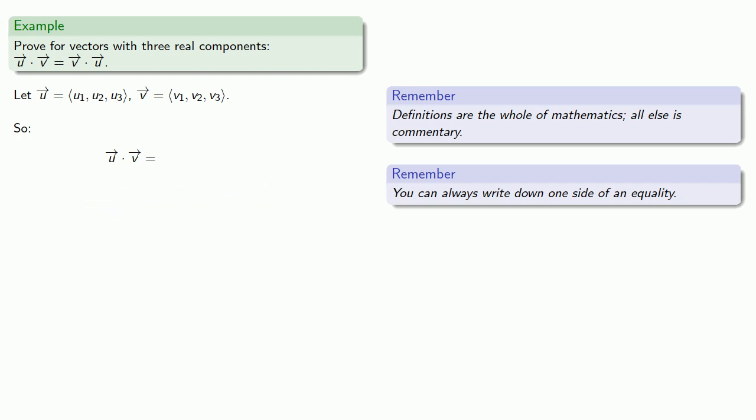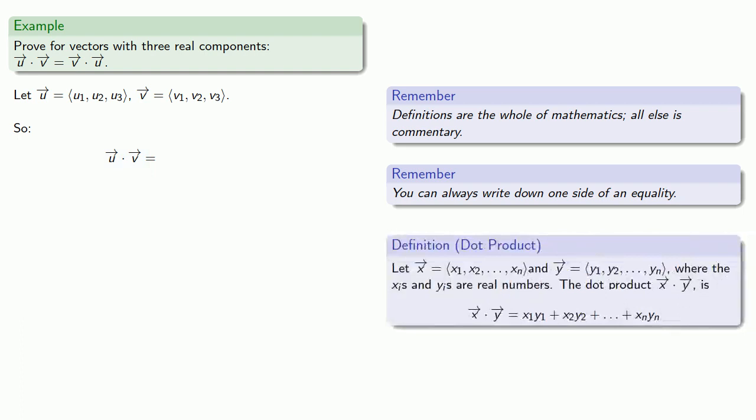And, definitions are the whole of mathematics. All else is commentary. We have U·V here. And, our dot product has a specific definition. It's the sum of the component-wise products. And, so, we can write out the sum of the component-wise products.